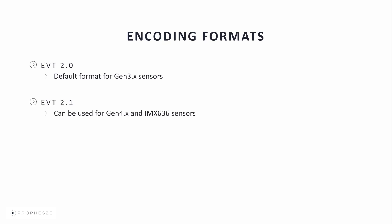EVT2.1 can be used for our Gen4 and the IMX636 sensors; however, EVT3 is the default format for the Gen4 and the IMX636 sensors. The last two are compressed formats and they allow more efficient data transfer. We'll give a brief overview on each of the encoding formats.